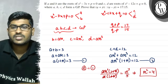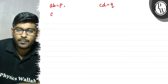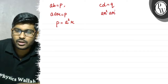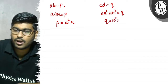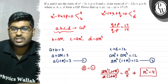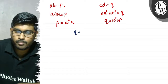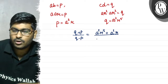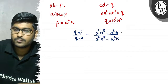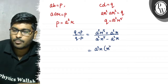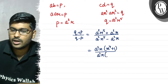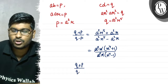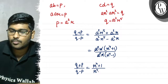Now, the product of roots of the first equation: a into b equals p, so a into ar equals a squared r, meaning p equals a squared r. The product of roots of the second equation: c into d equals q, so ar squared into ar cubed equals a squared r power 5, meaning q equals a squared r to the power 5. Now q plus p upon q minus p equals a squared r to the power 5 plus a squared r, upon a squared r to the power 5 minus a squared r. Taking out a squared r, we get r to the power 4 plus 1 upon r to the power 4 minus 1.